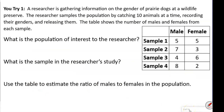Now you try one. The researcher is gathering information on the gender of prairie dogs at a wildlife preserve. The researcher samples the population by catching 10 animals at a time, recording their genders, and releasing them. The table shows the number of males and females from each sample. Answer: what is the population of interest, what is the sample, and estimate the ratio.